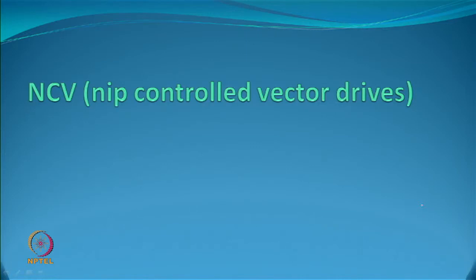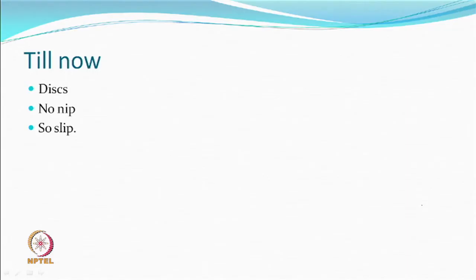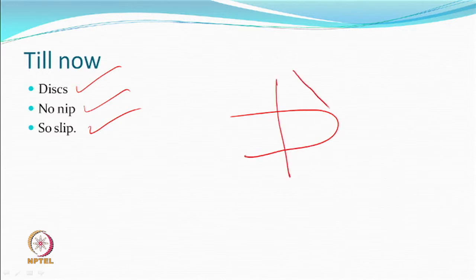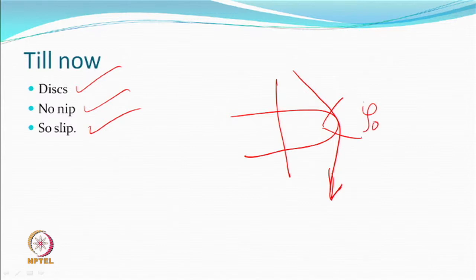A newer concept came as a nip-controlled vector drive — passing the yarn through a nip. The question is how do we produce a nip in a friction texturing system. Our discs at that point had no nip, and there was slip. What you have is the angle of wrap — no nip, so slip — and that is what we have.